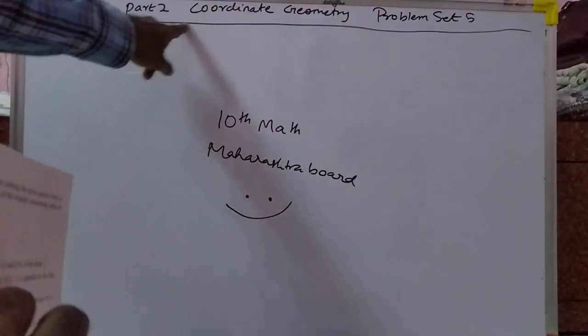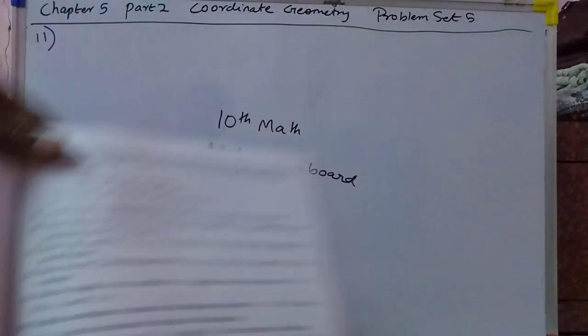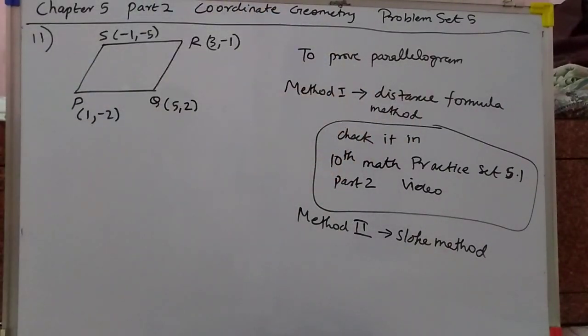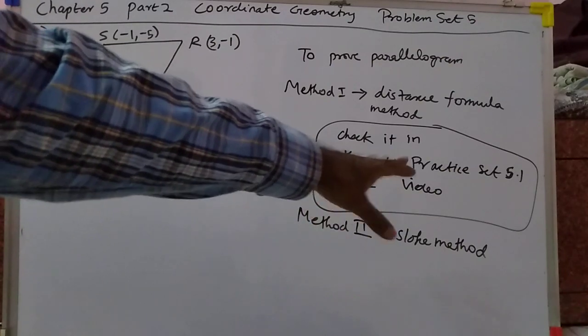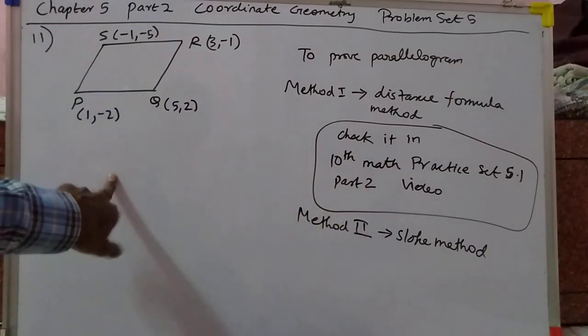Welcome students. Today we learn mathematics Part 2, Standard 10 — 10th math coordinate geometry. Problem number 11, Problem Set 5. Okay, Method 1 is the distance formula. We will try that in 10th math practice 5.1 Part 2 video. Method 2 is the slope method, and that is what we will use here now.